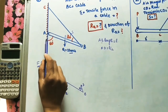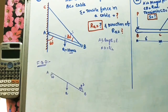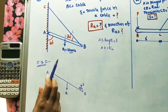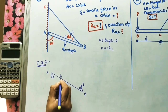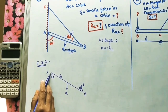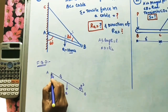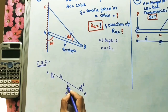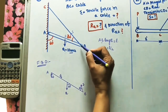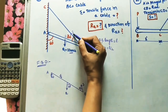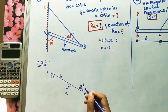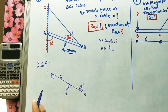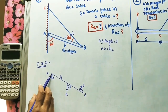Now let us draw the free body diagram. Here I am removing the vertical wall and drawing the AB bar. This is L by 2 and this is also L by 2. At point A, the bar is making 60 degrees. At point B, this cable has some tension S, making 30 degrees with the bar.